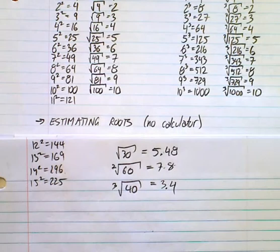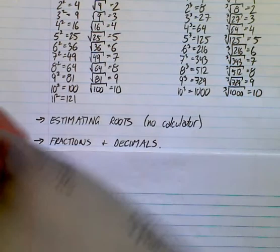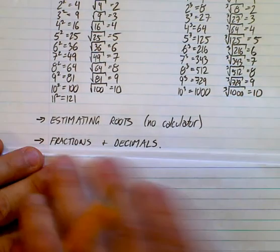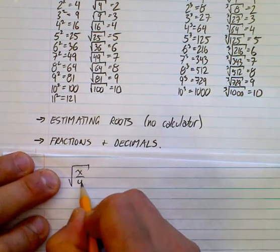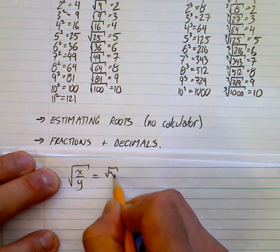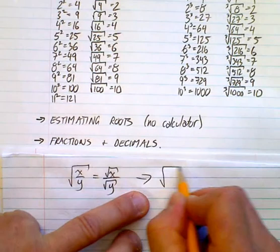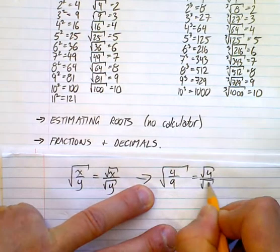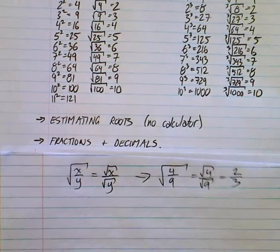Let's look at fractions and decimals. One rule you should know with radicals is that the square root of x over y equals the square root of x over the square root of y. For example, the square root of four ninths is the square root of 4 over the square root of 9, which is two-thirds.